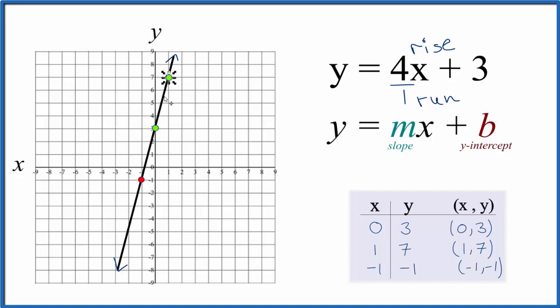I'm out of graph paper, so instead of going up 4 over 1, let's go the opposite direction: down 4 and then to the left 1. Do it one more time, down 4 and over 1 to the left. So all of these points are on our line, which means we did this first part correctly.